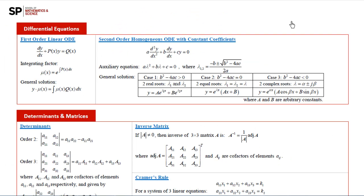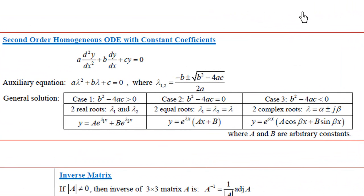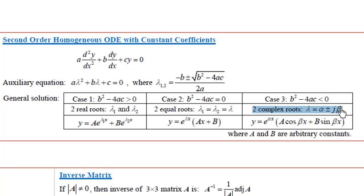You can also find a summary on page 3 of the formula cards. To solve the second-order homogeneous ODE with constant coefficients, a·d²y/dx² plus b·dy/dx plus cy equals 0, solve the auxiliary equation aλ² plus bλ plus c equals 0. If λ is complex, λ equals α plus or minus jβ, then the general solution is y equals e^(αx) times (a cosine(βx) plus b sine(βx)).